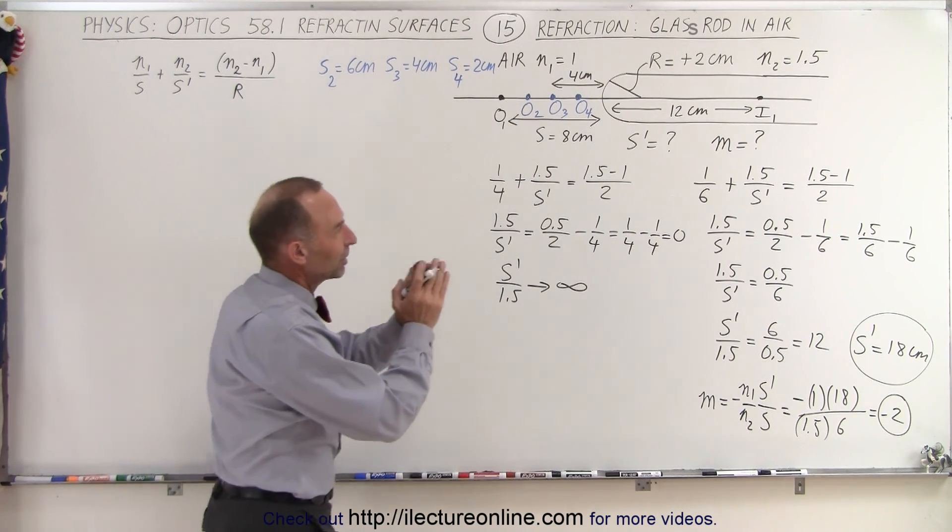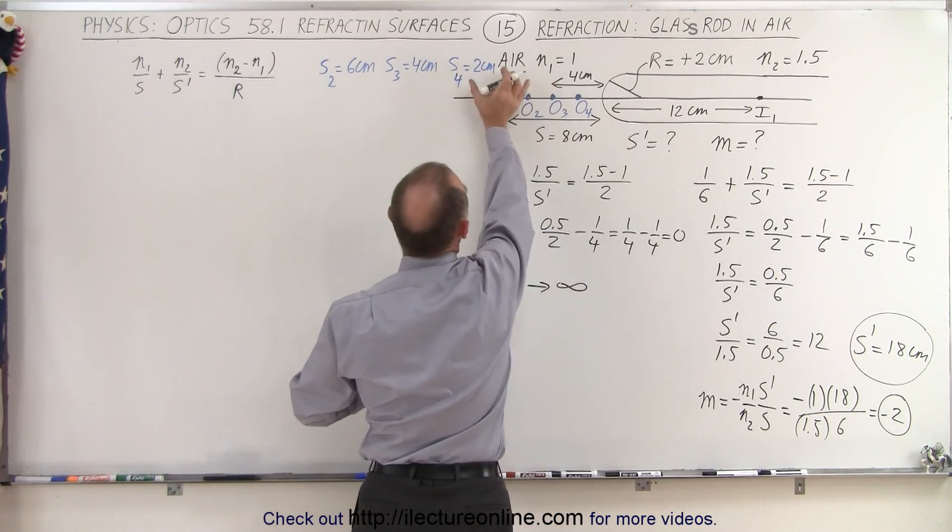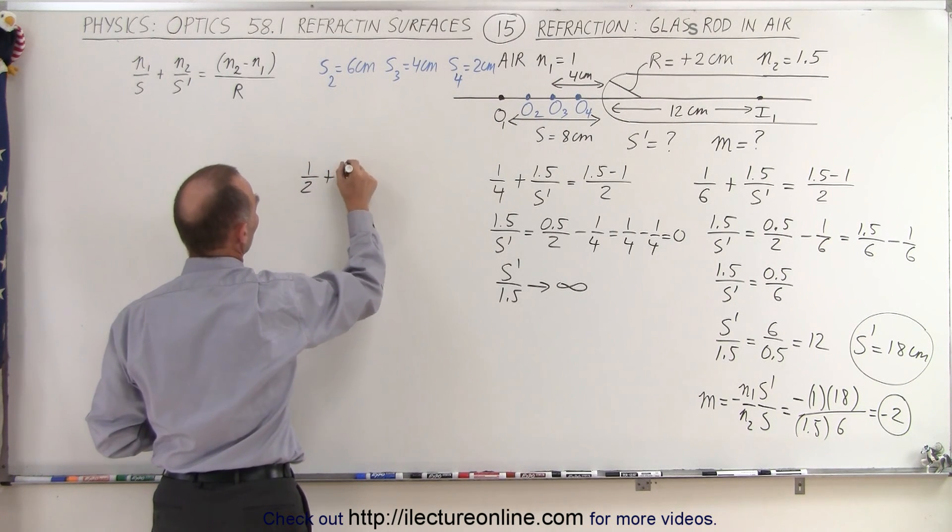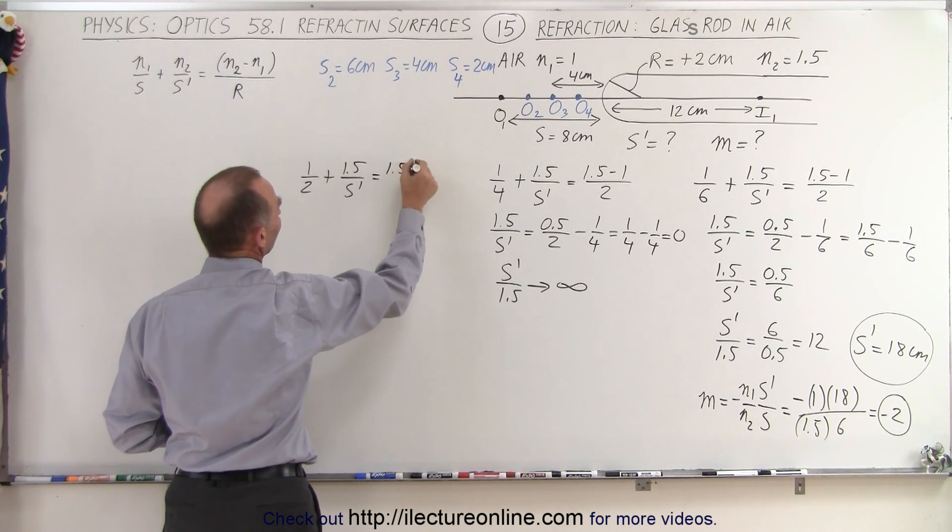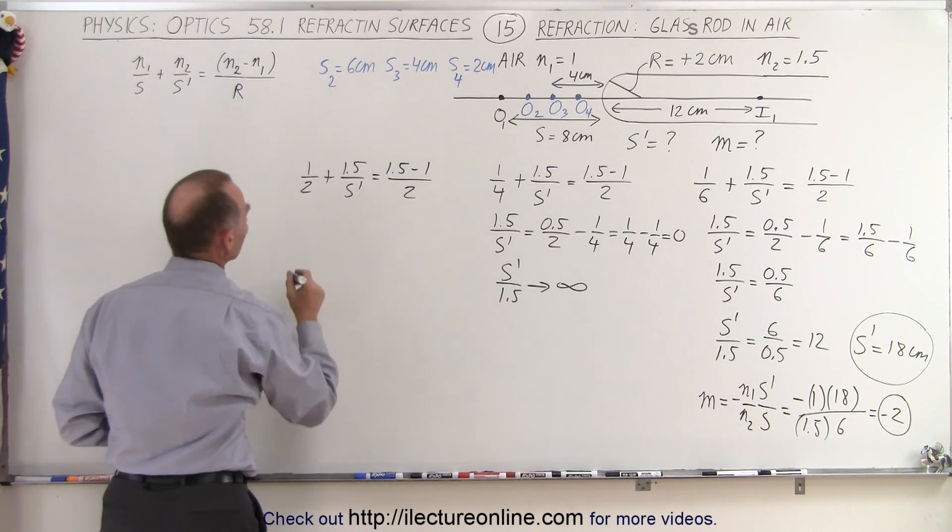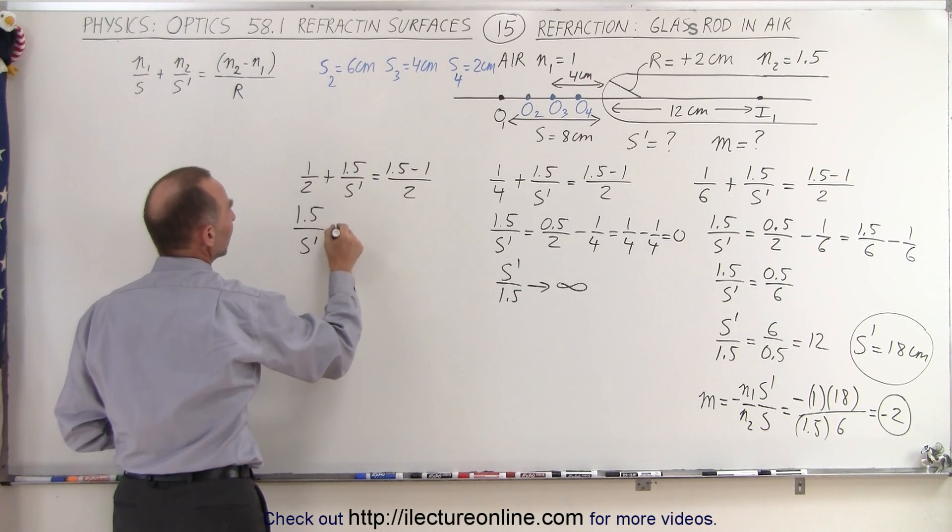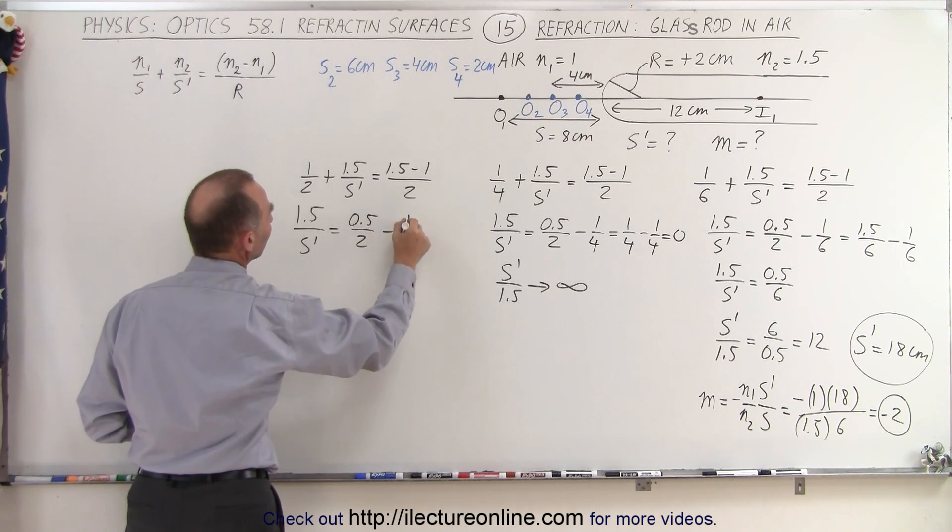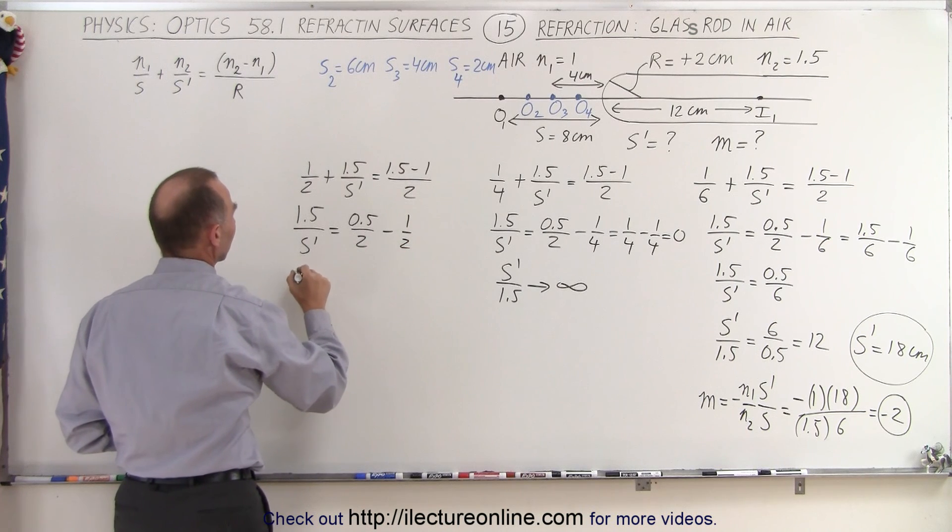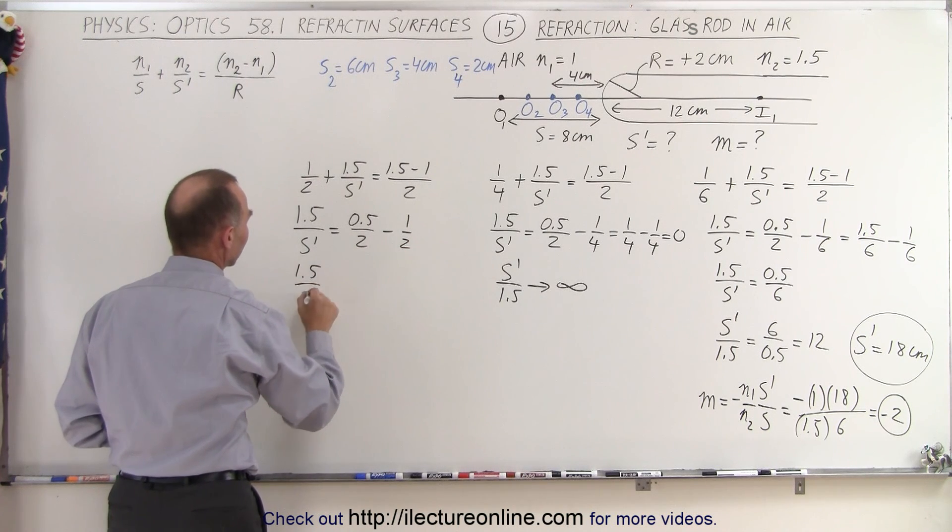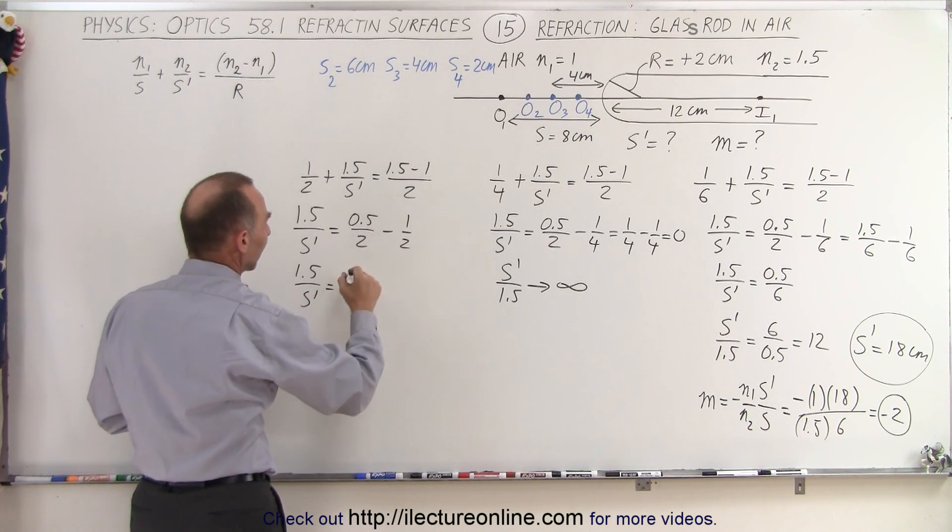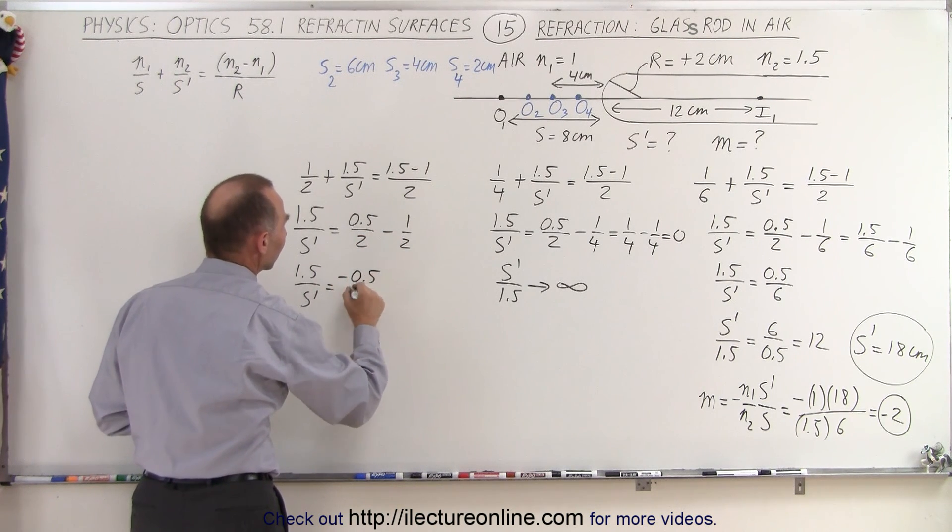Now let's continue to move the object even closer to a distance of 2 centimeters away and see what happens. 1 over 2 plus 1.5 over s prime is equal to 1.5 minus 1 over 2. So 1.5 over s prime is equal to 0.5 over 2 minus 1 over 2. So we get 1.5 over s prime is equal to 0.5 minus 1, that's minus 0.5 over 2.